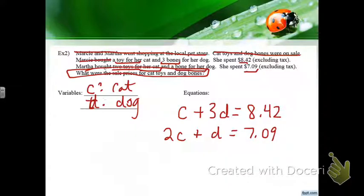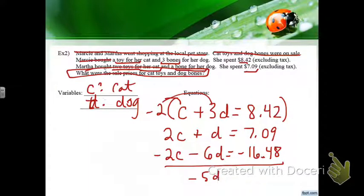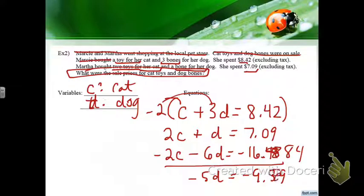These are lined up for elimination. I'll choose to eliminate C by multiplying the top equation by negative 2: negative 2C minus 6D equals negative 16.84. Adding the equations gives negative 5D equals negative 9.30 — note: it's negative 16.84, not 16.48. So 8.42 minus 9 gives 0.75 region. Divide by negative 5 to get D.